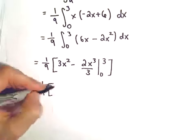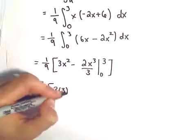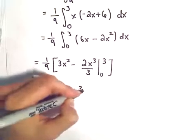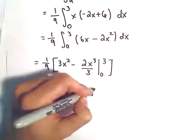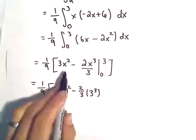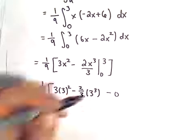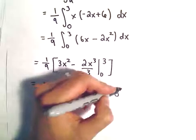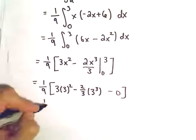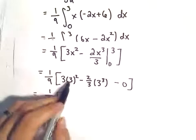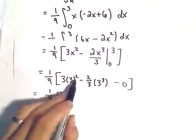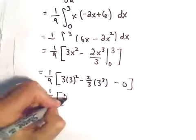So when we plug in 3, we'll get 3 times 3^2 minus 2/3 times 3^3. And when we plug in 0, we'll just get a couple 0s for our lower limits of integration. This is really 3, so 3^2 times 3 is 3^3, which is 27.